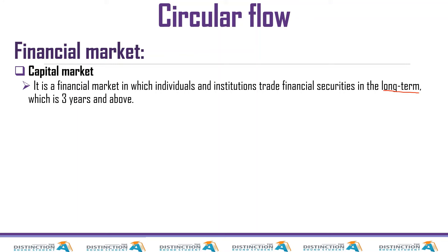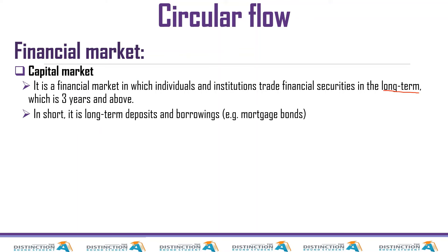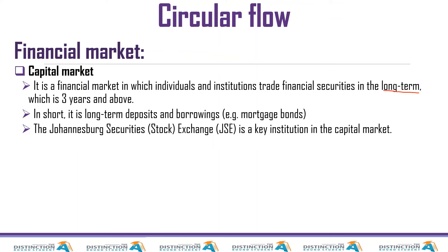The capital market is a means of borrowing and lending in the long term. In short, it is long-term deposits and borrowings. A good example is mortgage bonds. The JSE is a key institution in this market.